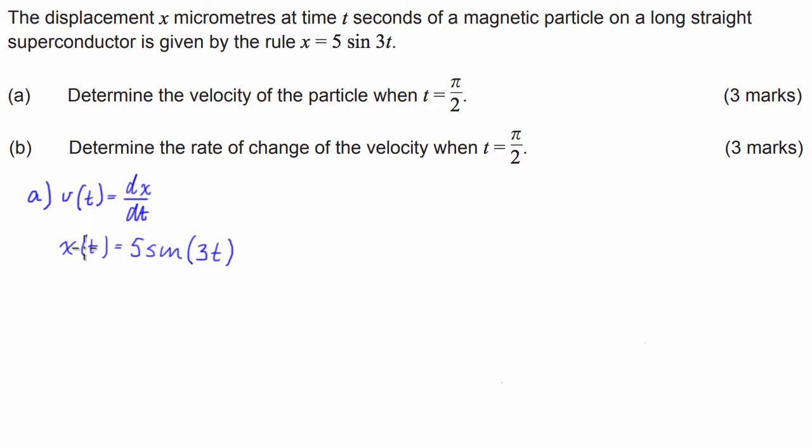So v of t is equal to, insert some new notation here, x dash of t, just to make it easier for ourselves, which is going to be equal to, well the derivative of sine is cosine of 3t and then we times the front by the derivative of the inside function, which is 3, so 3 times 5 is 15.